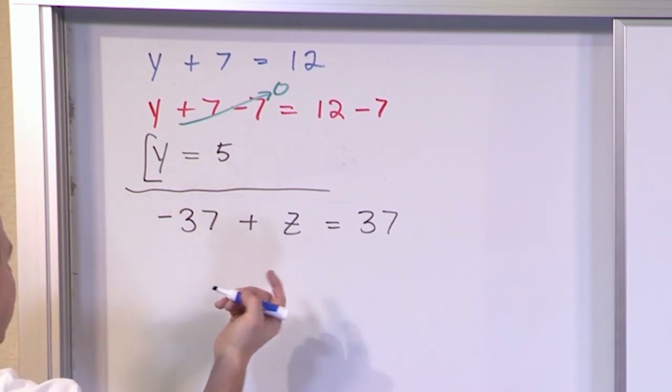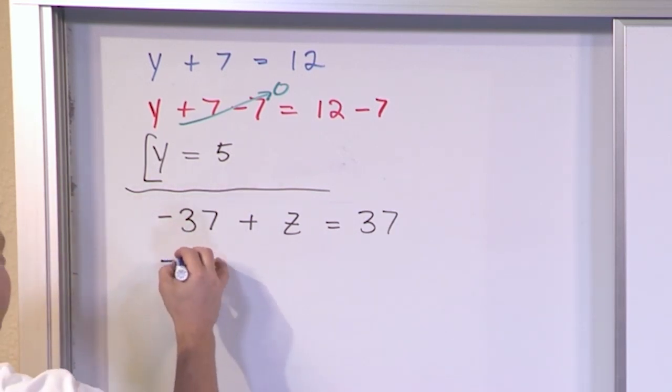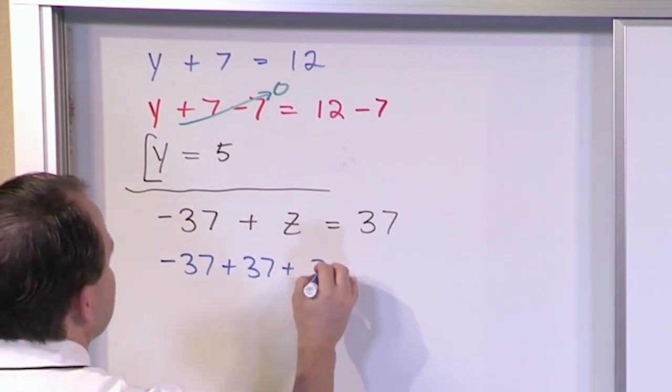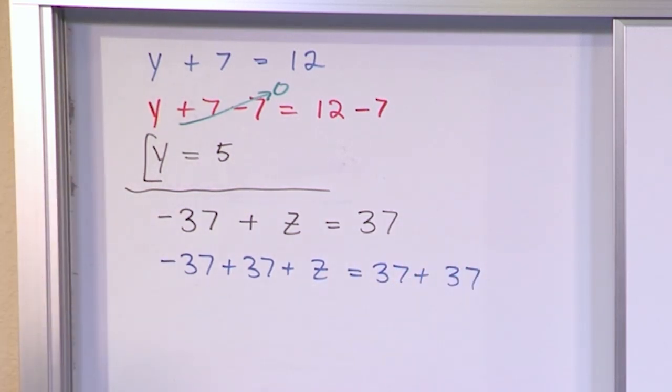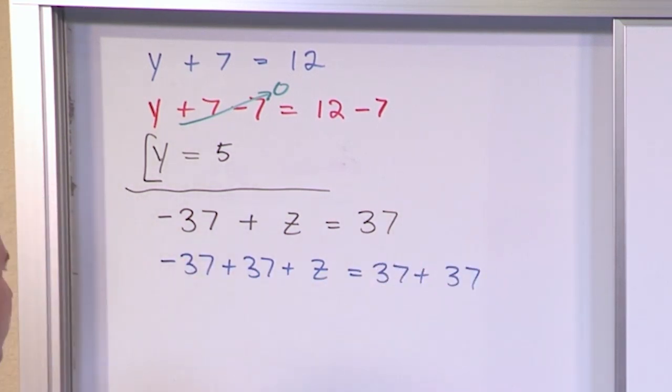This is negative, so we have to do the opposite of subtraction. We have to do addition. So negative 37. We add 37 to the left. And if we add it to the left, we have to add it to the right as well. In other words, all we did was add 37 here to the left-hand side, and then of course we had to do the same thing to the right-hand side.